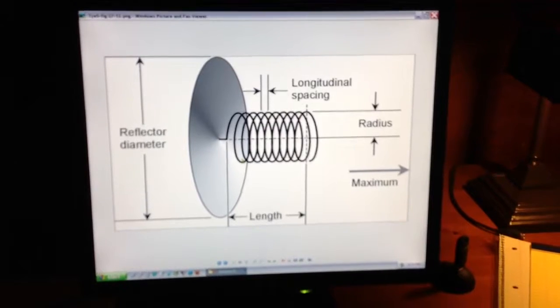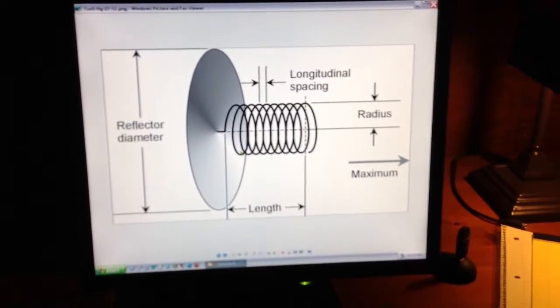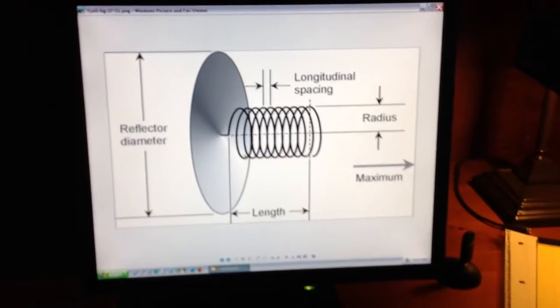The length, two-tenths of a meter is approximately about 7 inches. It would be a reasonable size antenna.